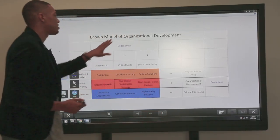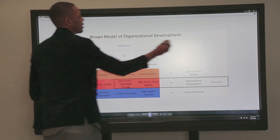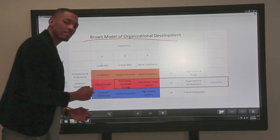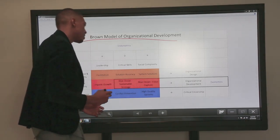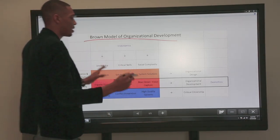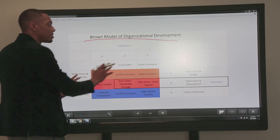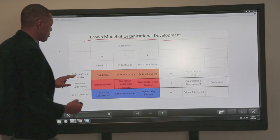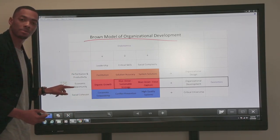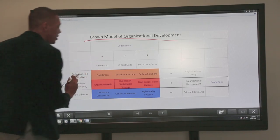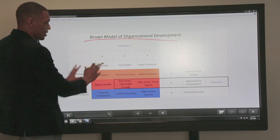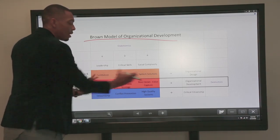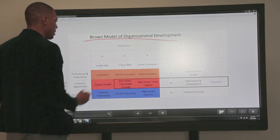I came up with what's known as the Brown Model of Organizational Development. The Brown Model is a matrix that can be read a number of different ways. The first way that it can be read, and it's honestly how I first conceived it, is that there are six dimensions. Leadership, critical skills, social complexity, performance, productivity, economic opportunity, and social cohesion. The six dimensions give rise to what are nine cells, or we'll call them intersections, literally where they line up.